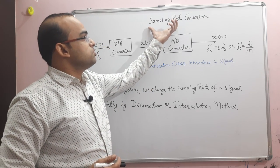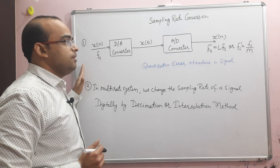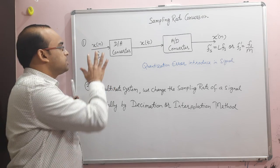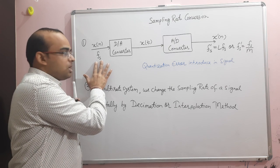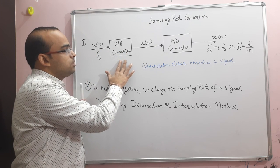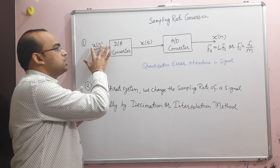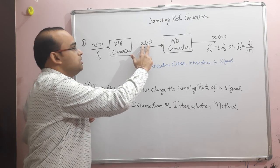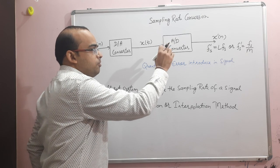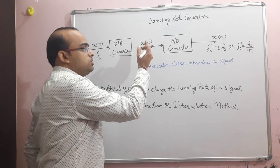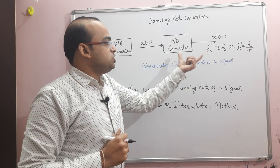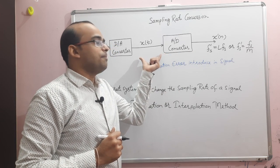Now for sampling rate conversion, we have two approaches. The first approach — which we don't prefer — is: suppose we have a signal x(n) with sampling rate Fs and we want to increase or decrease the sampling rate. First of all we pass it through a D-to-A converter, which converts the discrete time signal into a continuous time signal x(t). Then as per the requirement, we do A-to-D conversion to change x(t) into x'(n).